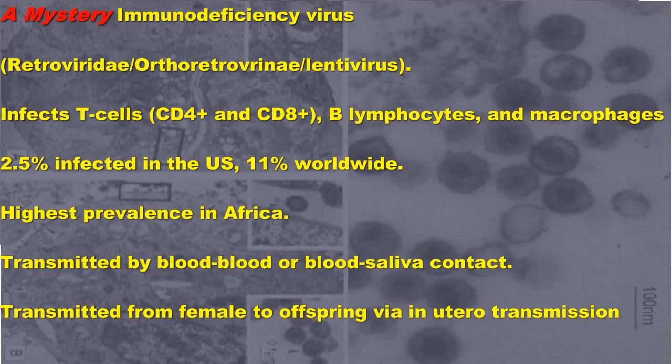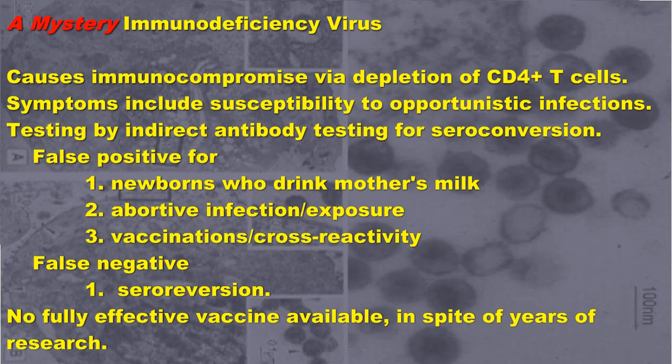The prevalence is 2.5% in the US and 11% worldwide. The highest prevalence is in Africa. It's transmitted by blood-to-blood or blood-saliva contact, and from female to offspring via in-utero transmission. It causes immunocompromise via depletion of CD4-positive T cells.